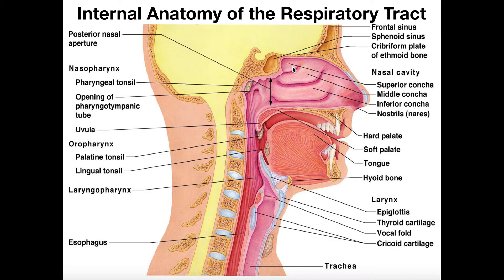These concha are sort of bulges that sit above grooves. Each concha has a corresponding groove called a meatus. The top bulge is the superior concha, then the middle concha, and the inferior concha. Beneath each is a corresponding meatus — superior meatus, middle meatus, and inferior meatus. Collectively, these concha help to warm and humidify the incoming air before it goes further into the respiratory tract.